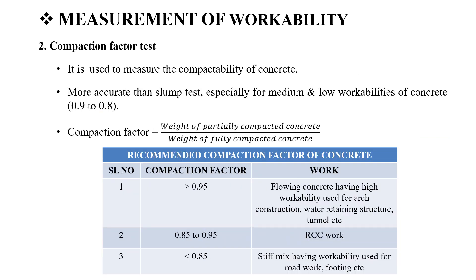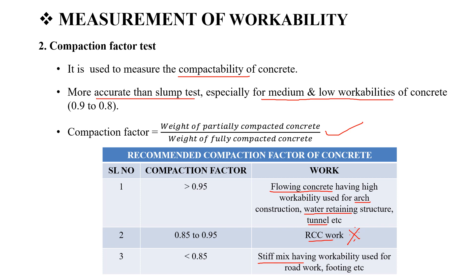The next test is the Compaction Factor Test. We use the Compaction Factor Test to measure workability for medium or low workable concrete. The equation is: weight of partially compacted concrete divided by weight of fully compacted concrete. Greater than 0.95 is flowing concrete, used for water-retaining structures. Compaction factor 0.85 to 0.95 is used in stiff mixes. Less than 0.85 is used in road work with footings.